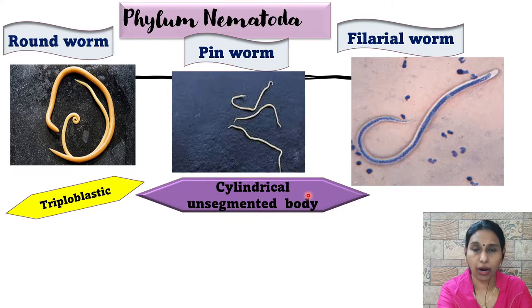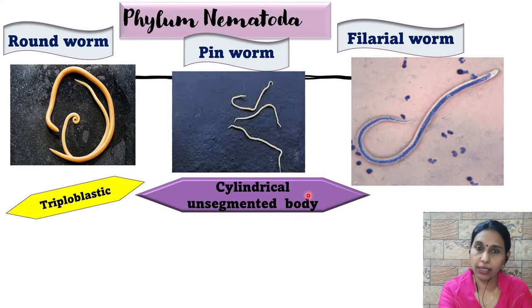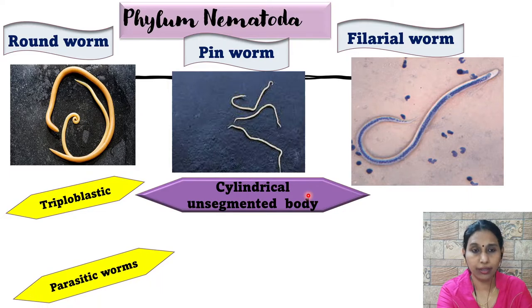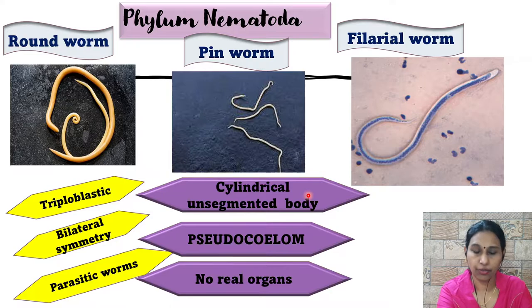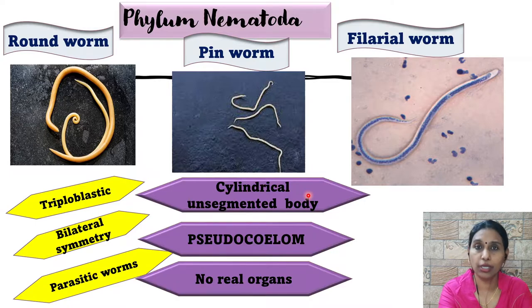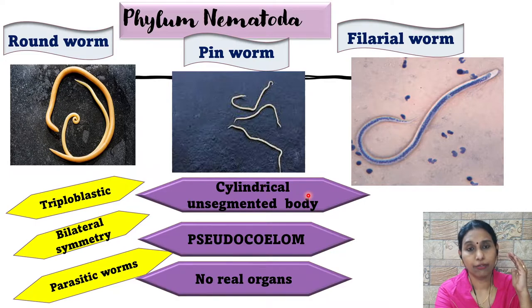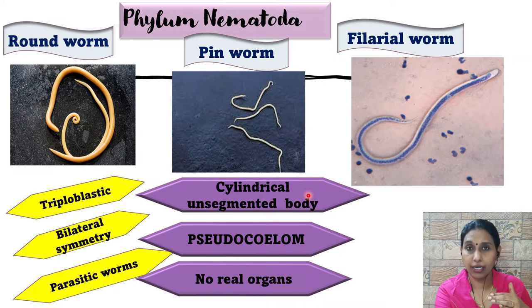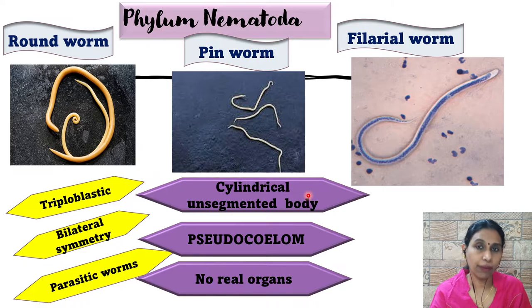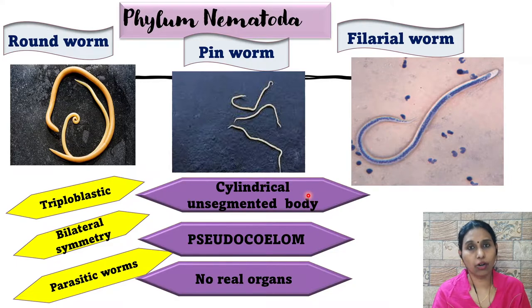Nematodes are all triploblastic in nature and all three examples — roundworm, pinworm, and filarial worm — are parasitic. They have bilateral symmetry. The most important feature of phylum Nematoda is the presence of a pseudocoelom. Till the third phylum, organisms were acoelomate — Porifera, Cnidaria, and Platyhelminthes had no coelom — but here, since organs have slowly started developing, there is a false coelom called the pseudocoelom, and no real organs are fully formed yet.